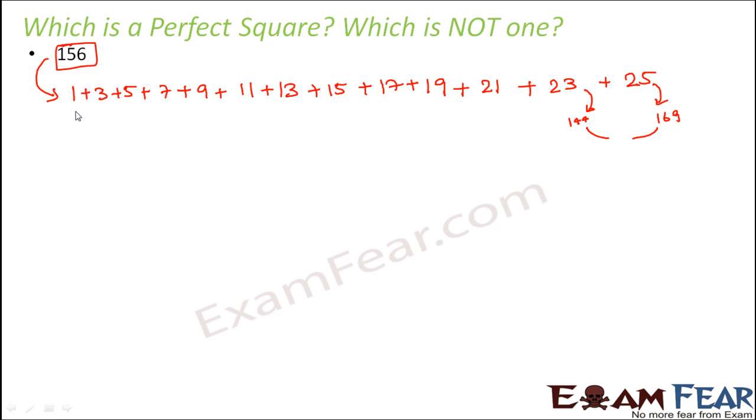Because if we take, let's count the number of odd numbers, 1, 2, 3, 4, 5, 6, 7, 8, 9, 10, 11, 12. So if we take 12 odd numbers, then the sum of 12 odd numbers is 144. If we take 13 odd numbers, then the sum of 13 odd numbers is 169. But we want 156. This means that 156 cannot be expressed as the sum of first n odd numbers. Therefore, 156 is not a perfect square.